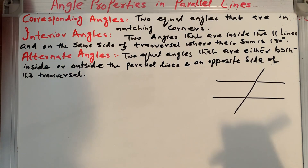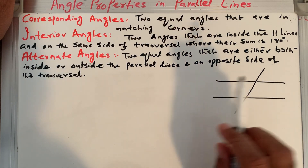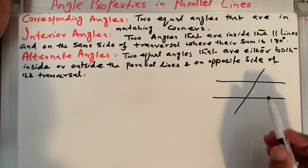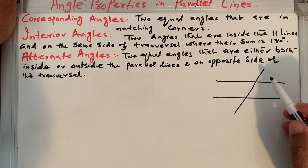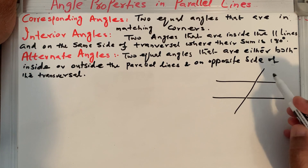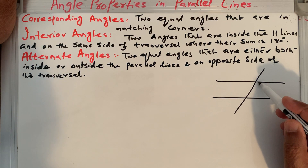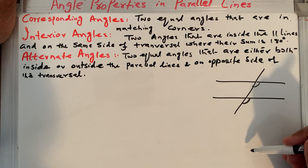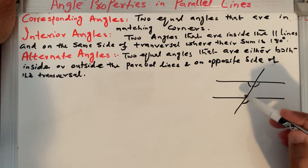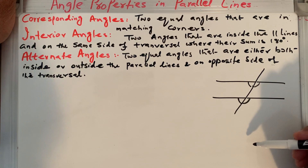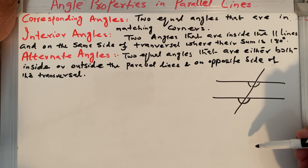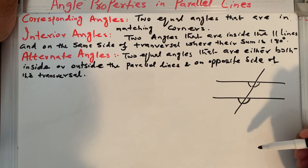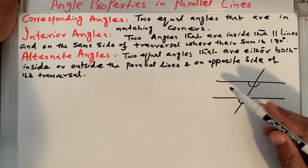We will learn today about corresponding angles: two angles that are in matching corners. There are too many angles formed, but we are considering which angles are in the matching corners. This angle matches with this one — these are matching corners. So these matching corners are called corresponding angles. When one transversal falls on parallel lines, we can identify several matching corners.